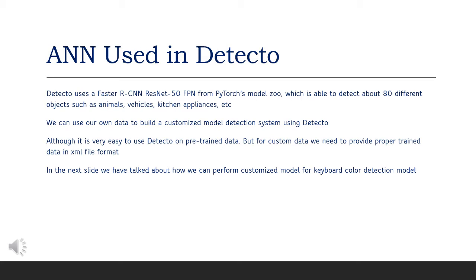Artificial Neural Network used in Detecto. Detecto actually is a machine learning library in Python, which is used for object detection in images. It is from PyTorch Model Zoo, where it uses Faster CNN ResNet 50 FPN.